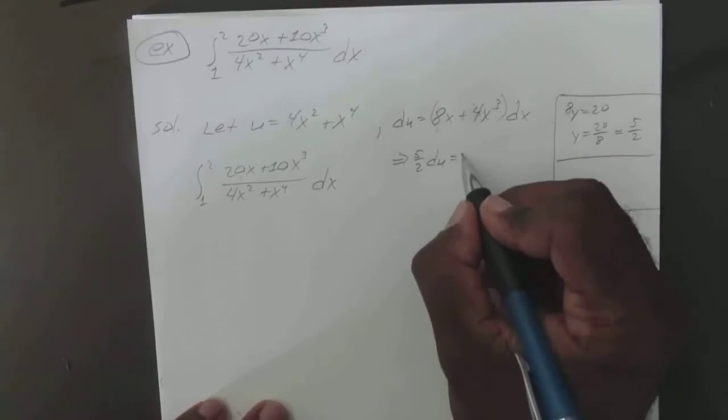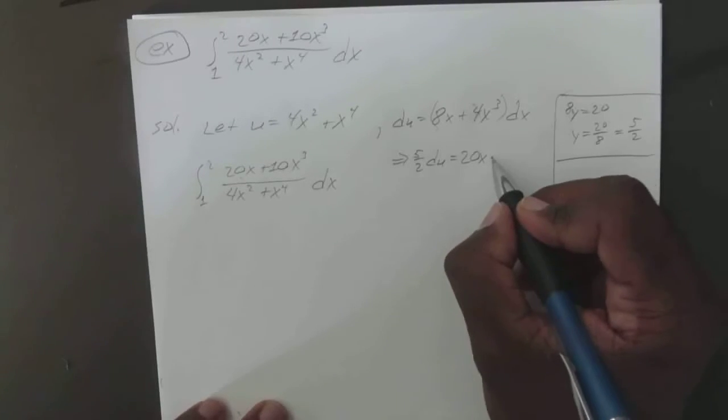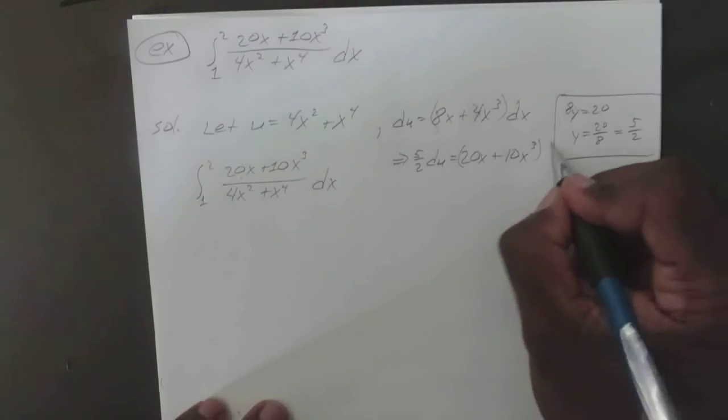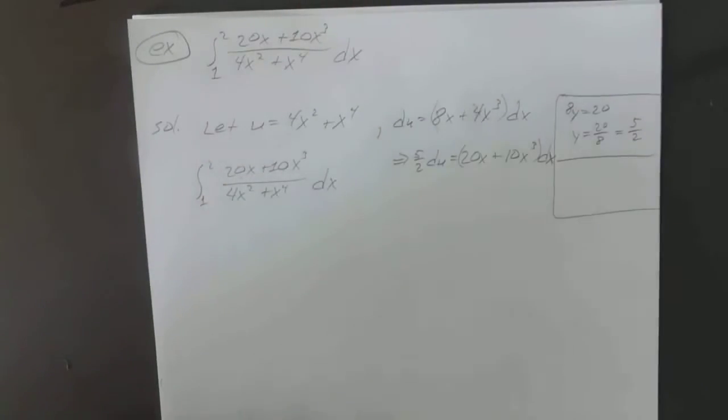du is going to equal 20x plus 10x to the 3rd dx. So sometimes you have to manipulate a little bit more on some problems than others.